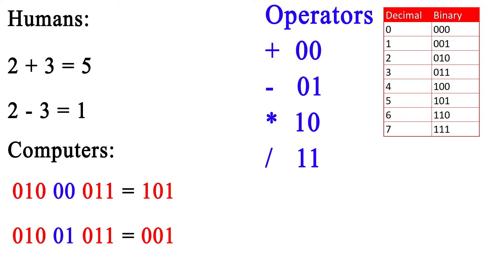In binary, the decimal numbers are represented as: 2 is 010, 3 is 011, and 5 is 101. The plus sign is encoded as 0,0 and the minus sign as 0,1. Operations and numbers are all stored as binary.